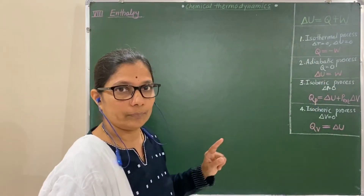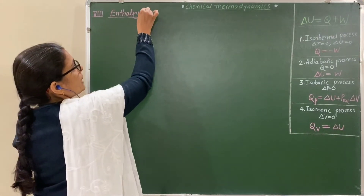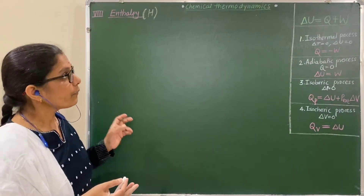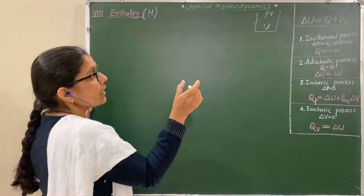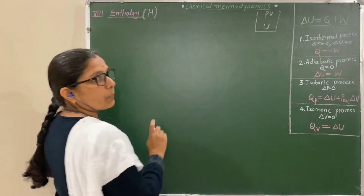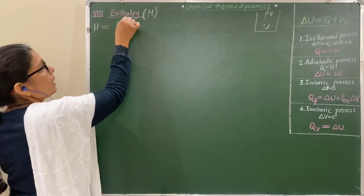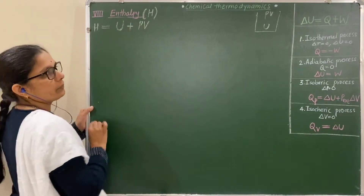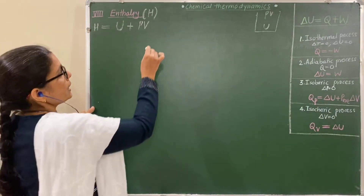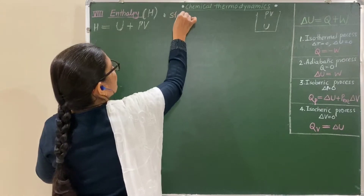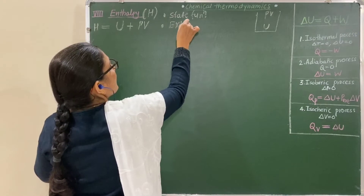Now let us see the next point — point number eight: enthalpy. Enthalpy is denoted by the symbol H. Enthalpy is the sum of the internal energy of the system and the energy equivalent to PV type of work. Since internal energy, pressure, and volume are all state functions, enthalpy is also a state function. Enthalpy depends on the amount of substance, so it is an extensive property.